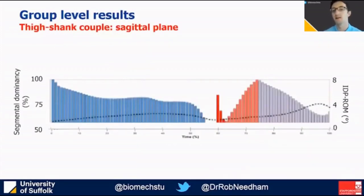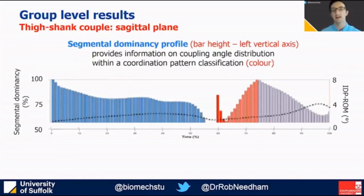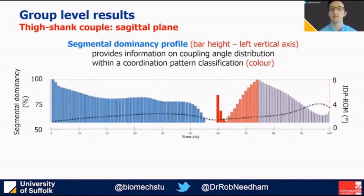In this visualisation, bar height represents the segmental dominancy from 50 to 100%, and bar colour again represents the coordination pattern classification as in previous slides. Vector coding alone however cannot provide a measure of control such as range of motion or angular velocity, and these often differ even when coordination is similar between individuals, so it's important to include these.